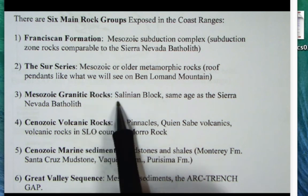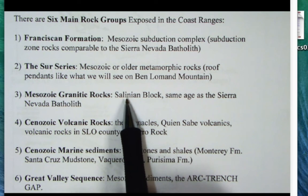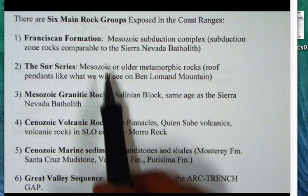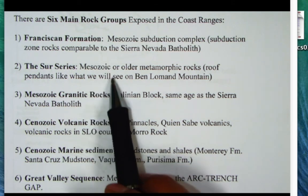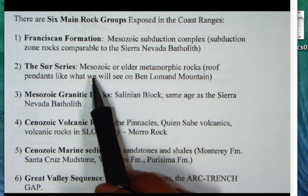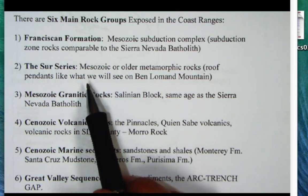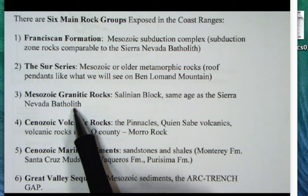The Salinian Block granites and the overlying roof pendants represent the core of the Salinian Block — an unusual series of rocks exposed in the Coast Ranges. The Coast Ranges should be subduction zone material, yet these two together represent a magmatic arc like the Sierra Nevada. This is explained by the San Andreas Fault moving these materials from Southern California northward into coastal California.